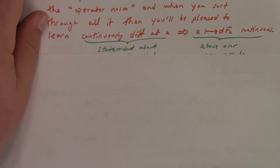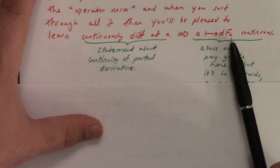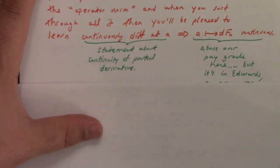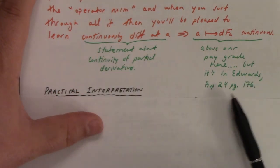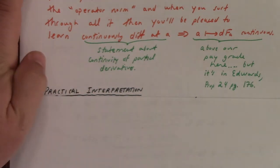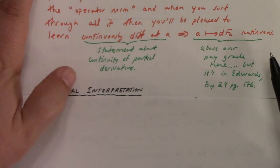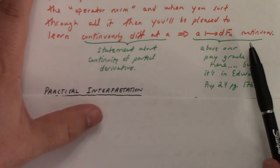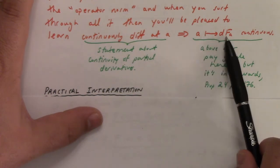So it can be described via the operator norm. And when you sort through all of it, you'll be pleased to learn that continuous differentiability at a means that the assignment a maps to the differential of a is continuous. And, again, that's above our pay grade here, but if you want to see it, it's in Edwards Proposition 2.4, page 176. This terminology of continuously differentiable does, in fact, imply continuity of the derivative in the abstract sense of point maps to operator.